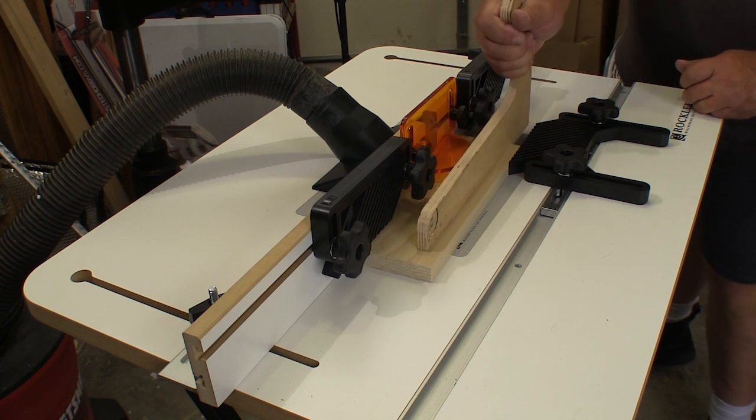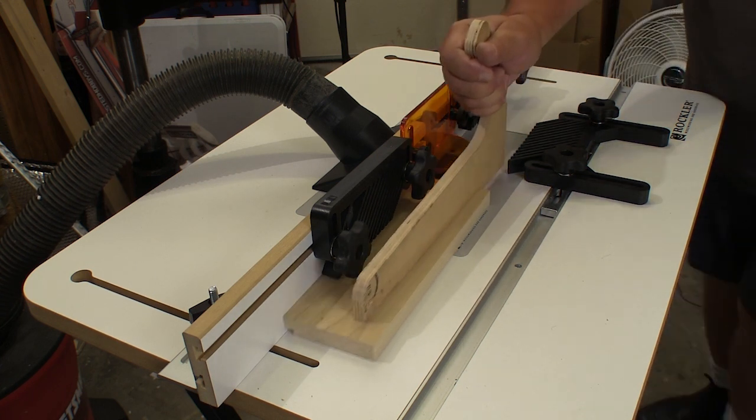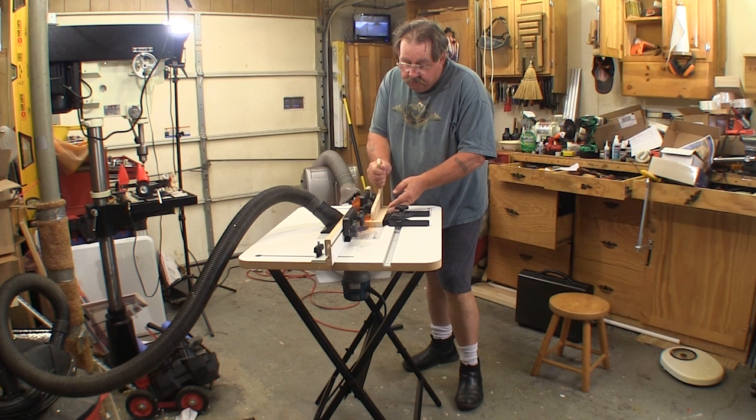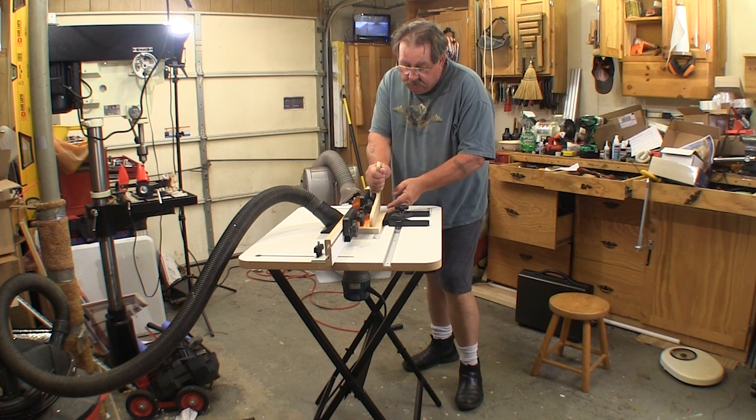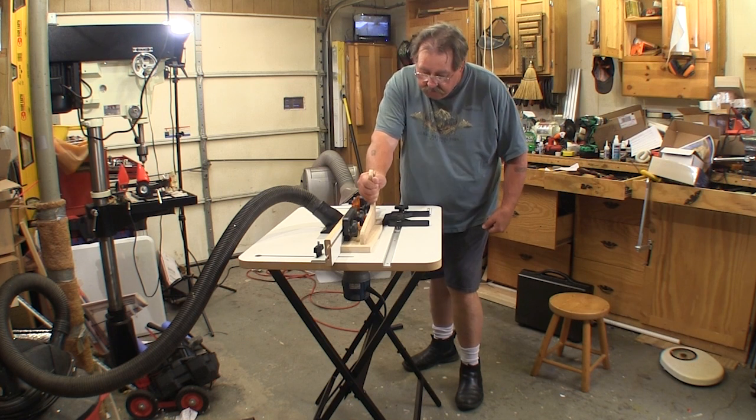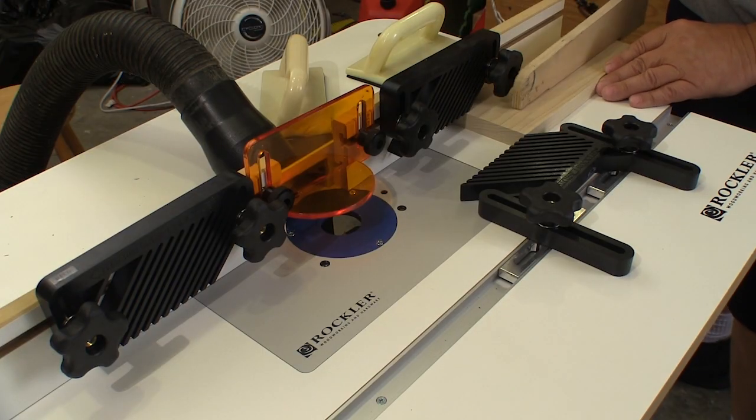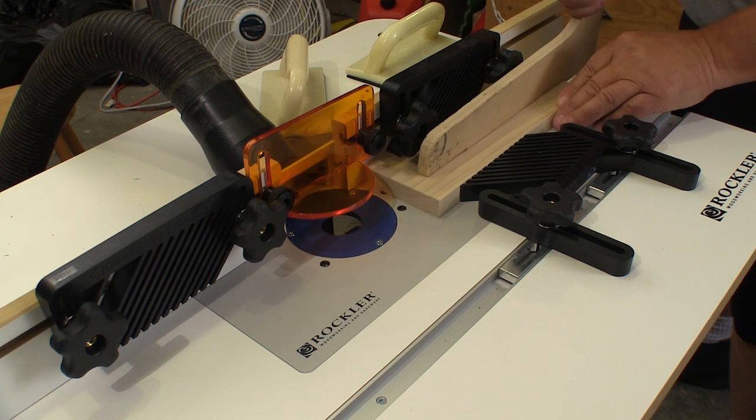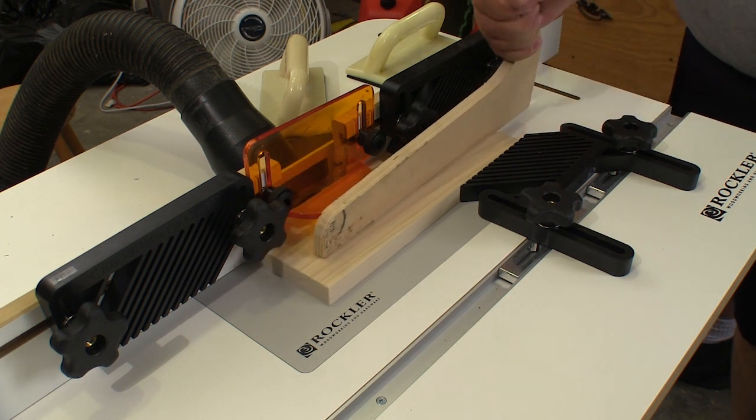So if you need a router table and you don't have a big shop or a big budget, you need to check out Rockler's Complete Basic Router Table Kit before they run out. It doesn't have a lot of the frills that you don't need, but it is accurate, safe, and very solid.